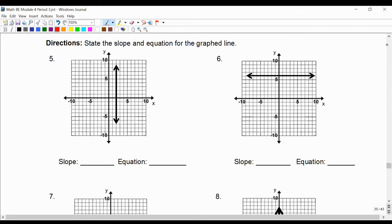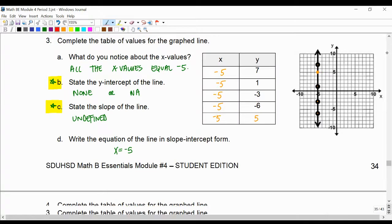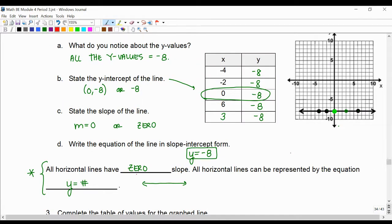And we'll want to go back, if we have questions about these, and look at the two sentences or rules that we wrote, which was this one: all vertical lines have undefined slope and are x equals a number, and all horizontal lines have zero slope and are y equals a number.